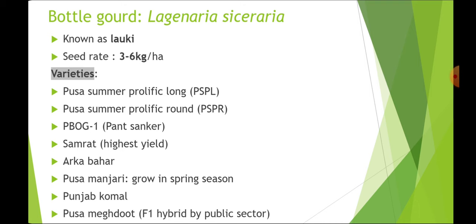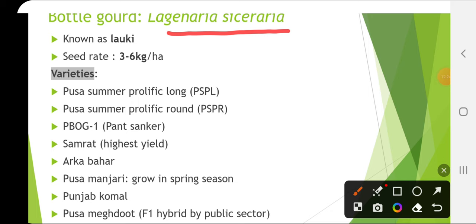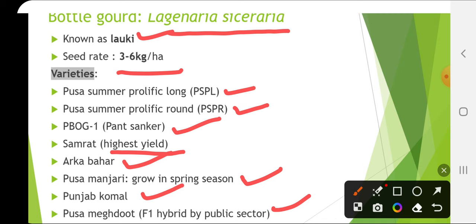The next important crop is bottle gourd, scientific name Lagenaria siceraria, known as Lauki. Seed rate is 3 to 6 kg per hectare. Varieties include Pusa Summer Prolific Long, Pusa Summer Prolific Round, PBOG, Pant Sankar, Samrat (highest yield), Arka Bahar, Pusa Manjari, Punjab Komal and Pusa Meghdoot, which is the first F1 hybrid by the public sector.